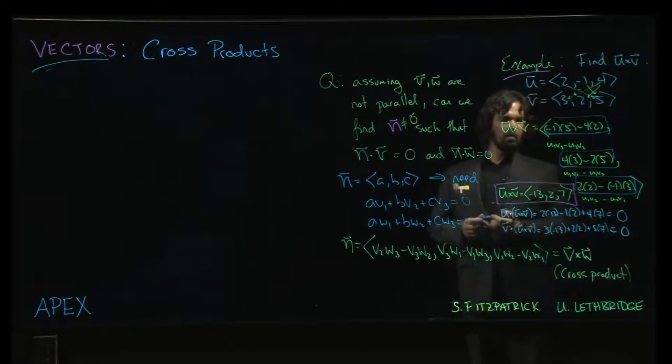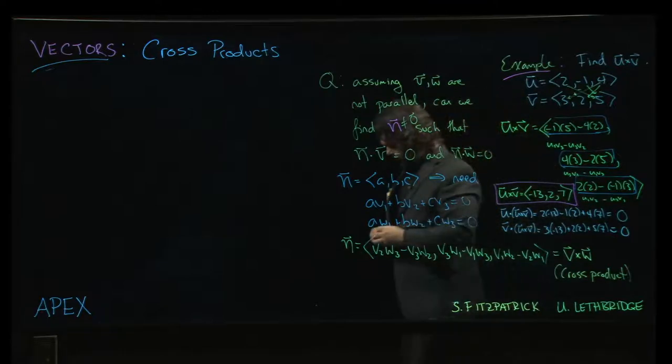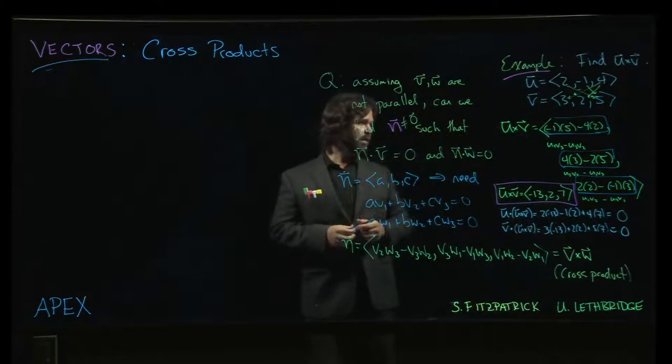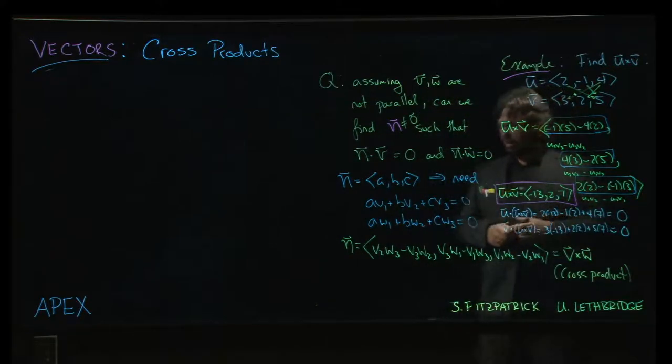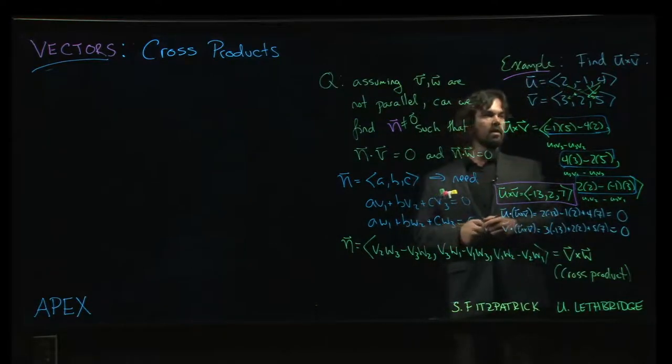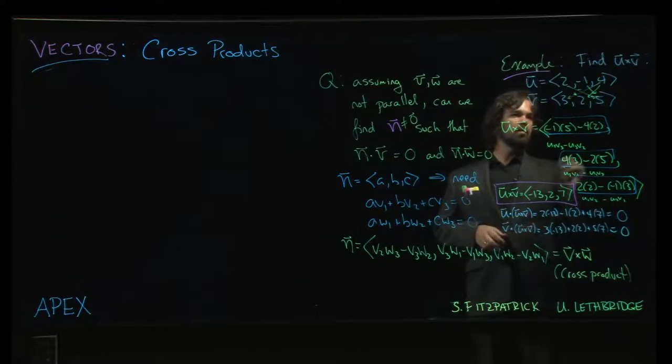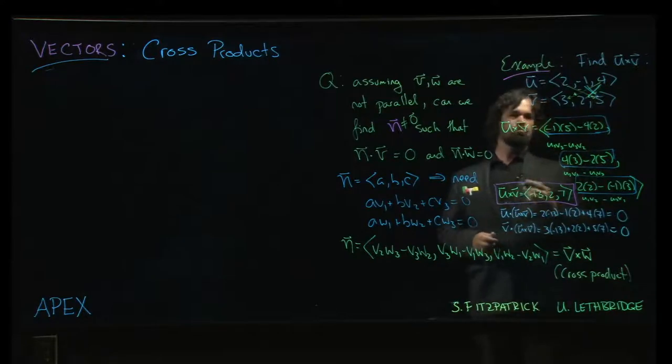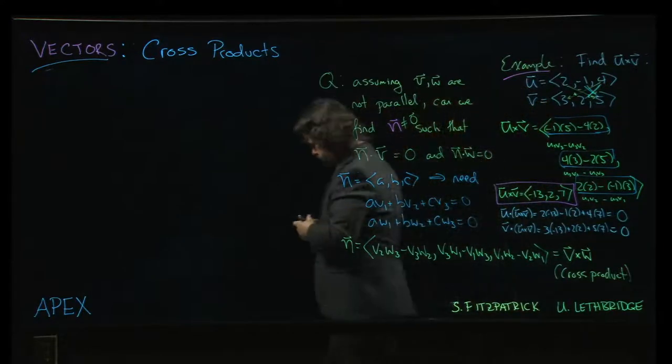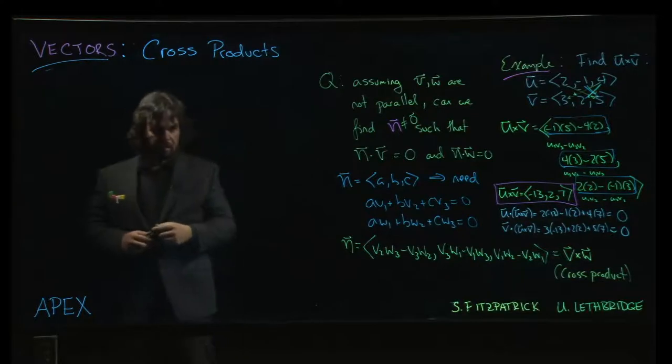But if you've done a little linear algebra already, like a lot of the University of Lethbridge students have, then you might notice that multiplying this way and then that way might remind you of doing a two-by-two determinant.